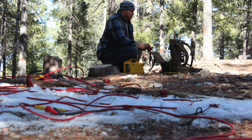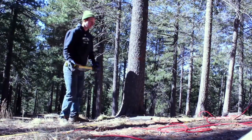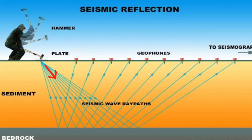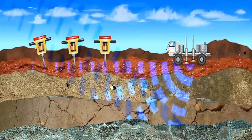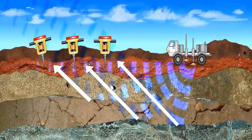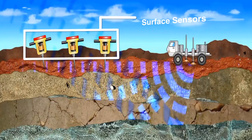The long cable connects all the geophones to a computer. Then, researchers use a sledgehammer to pound a metal plate. The impact generates a pulse of energy — a seismic wave that travels through the ground. When the energy wave hits rocks or a layer of rock underground, it bounces or reflects off the layer of rock and returns to the sensors at the surface.